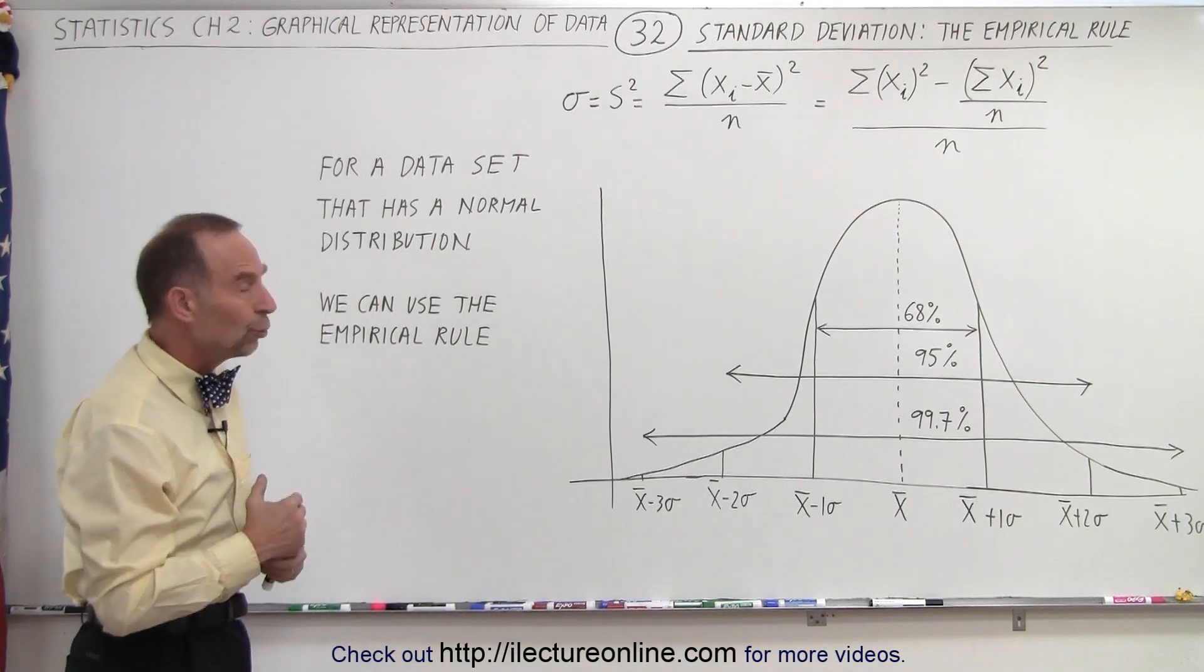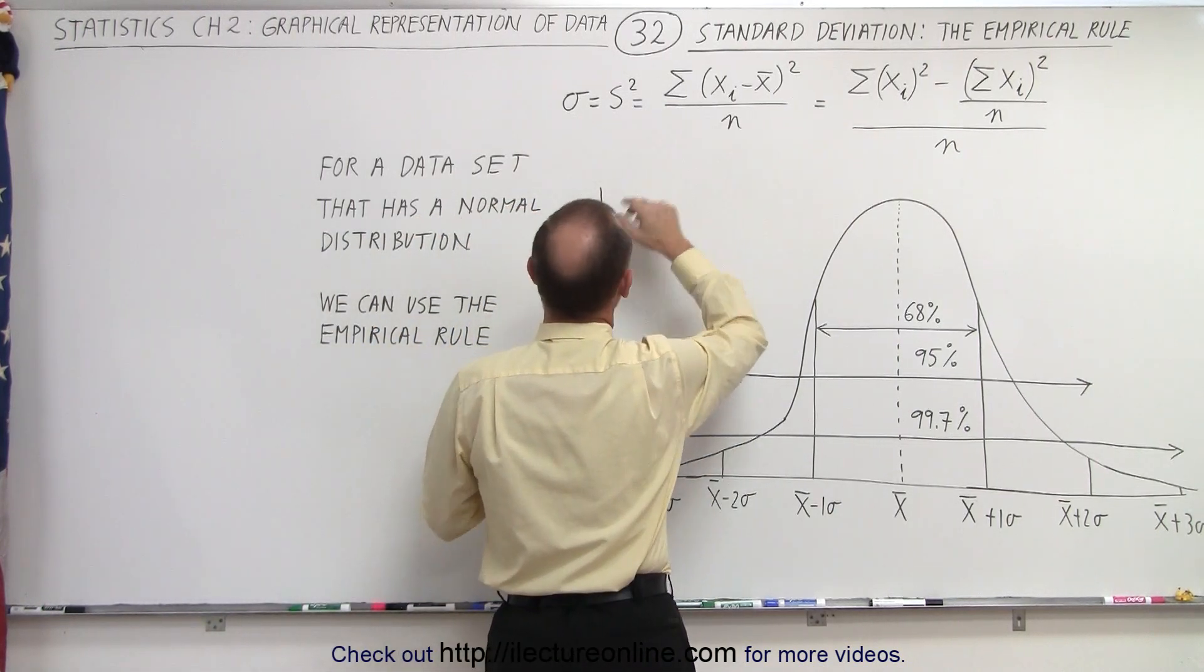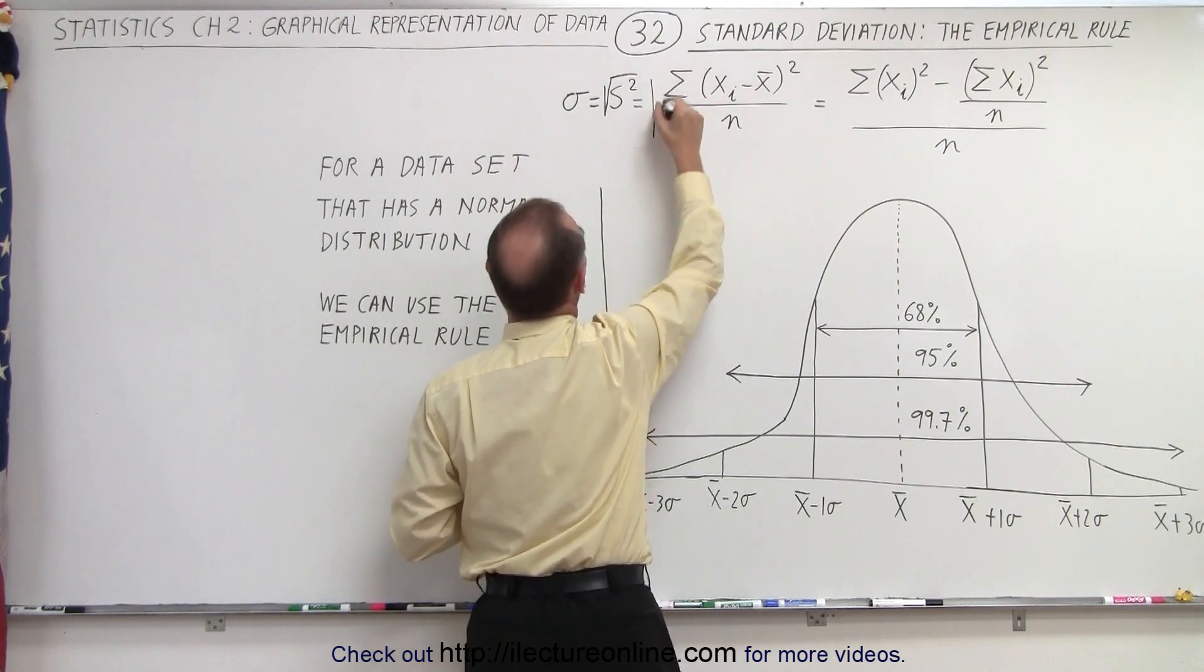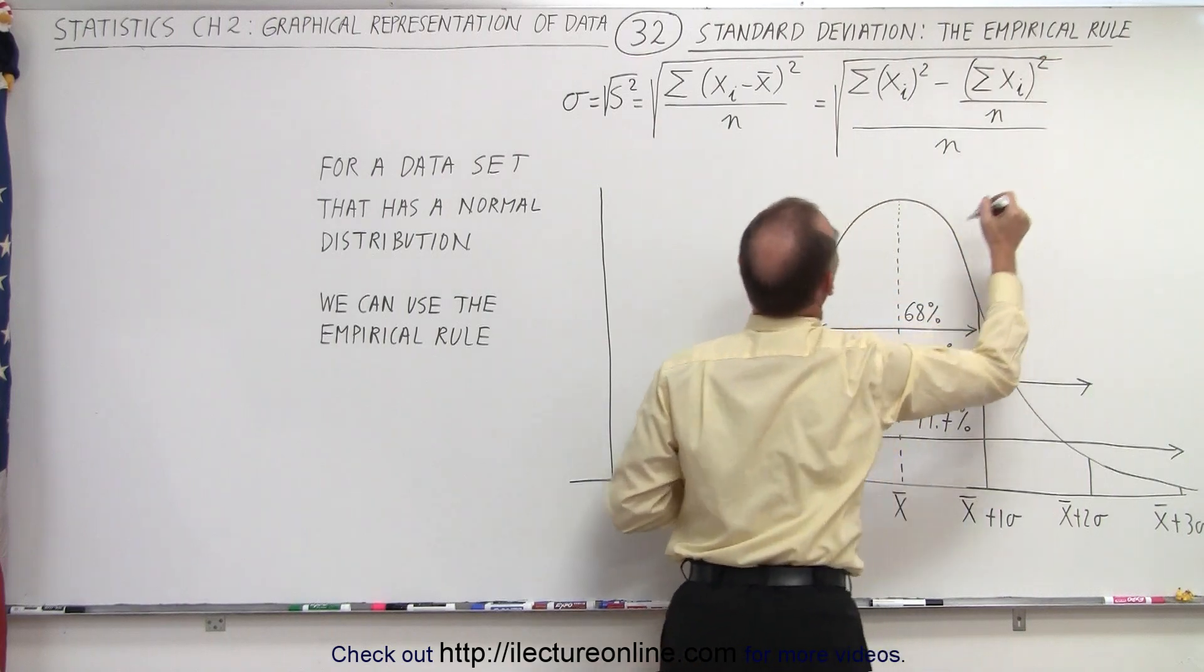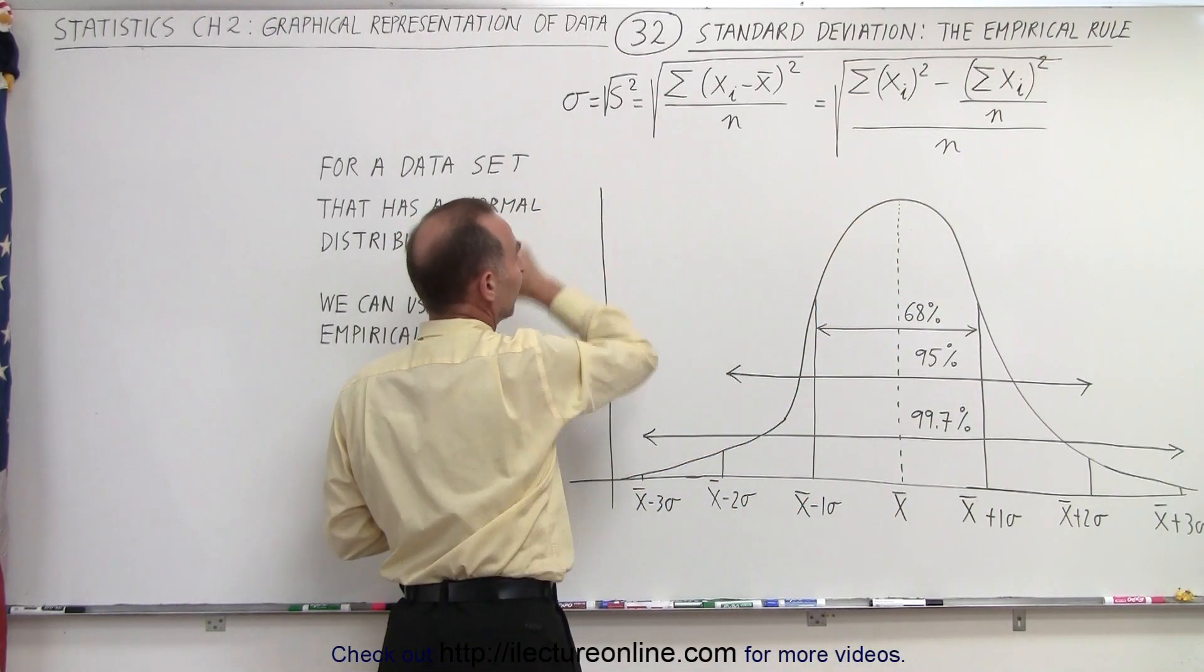Then, if that's true, once we calculate the standard deviation, and the standard deviation will be calculated like this, well, it's actually the square root of that. So you can see that we take the variance, take the square root of the variance, we get the standard deviation.